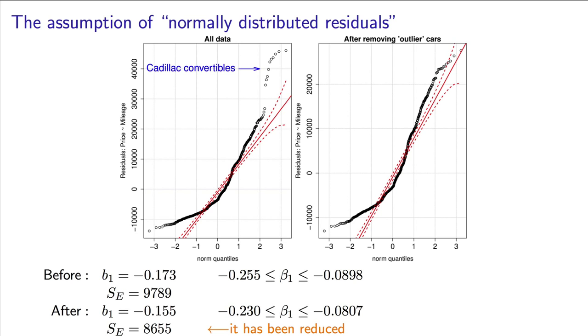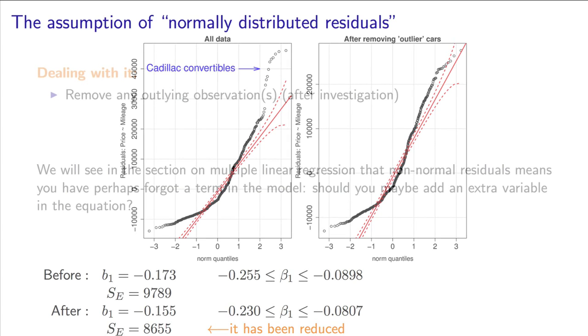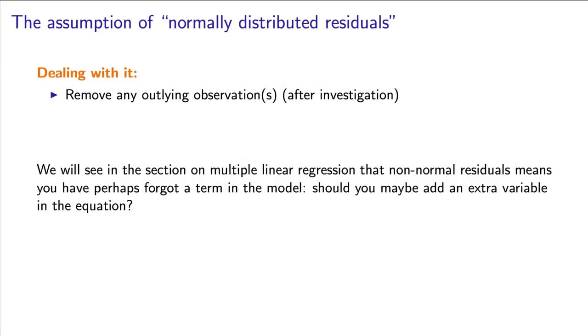That will have to wait for a few videos from now. So we've seen one way to deal with non-normality is to exclude outlier observations. Severe non-normality in the residuals gives us an indication that these residuals contain other information. If there is no information left in our residuals, we expect roughly normally distributed values.